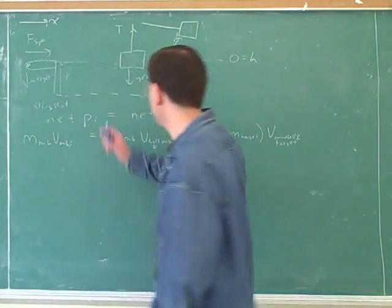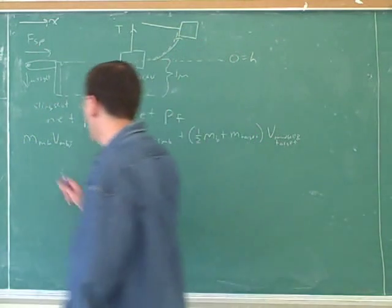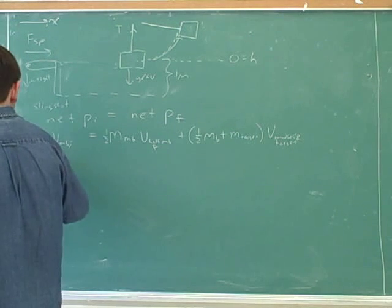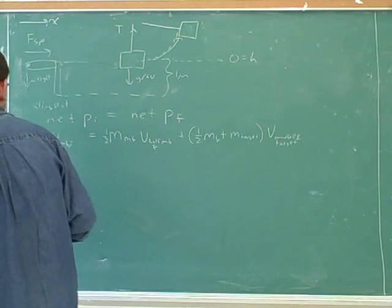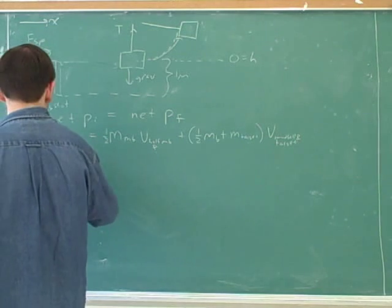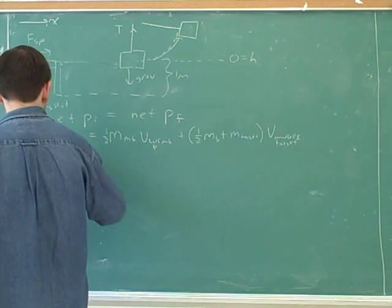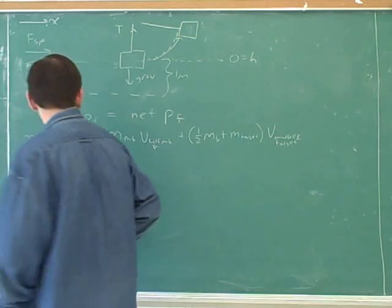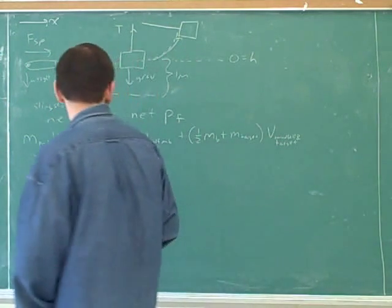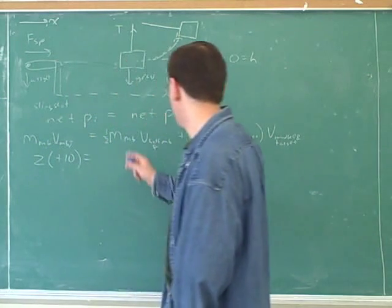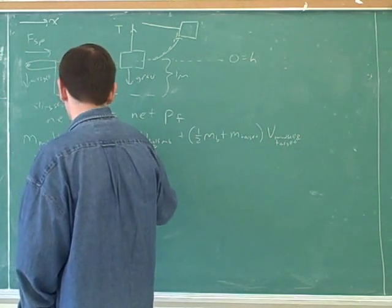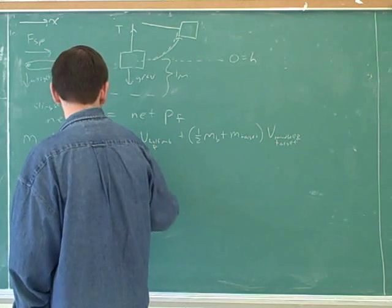So again, momentum is going to be conserved. The initial mass of the mud ball was 2 kilograms, and its initial velocity was positive 10 meters per second right before the collision. Initially the target had no momentum because it was at rest. And then afterwards, we have the momentum of half of the mud ball — that half has a mass of 1 kilogram.